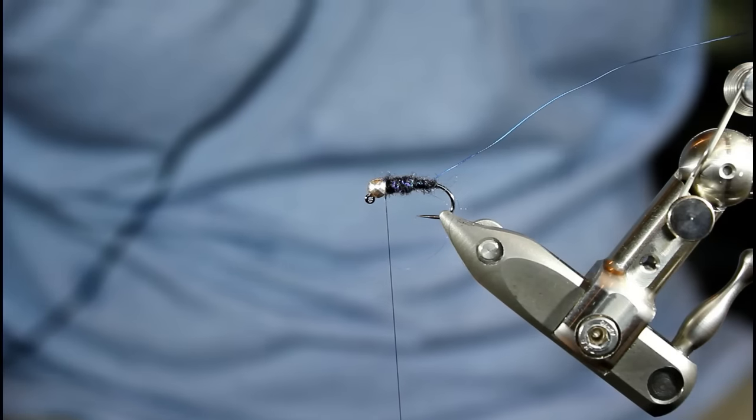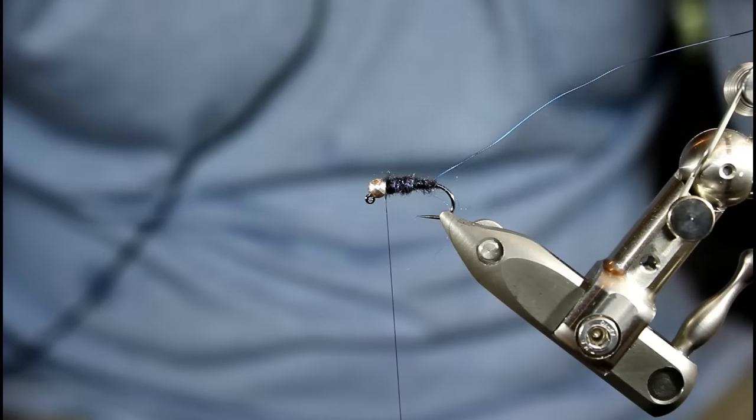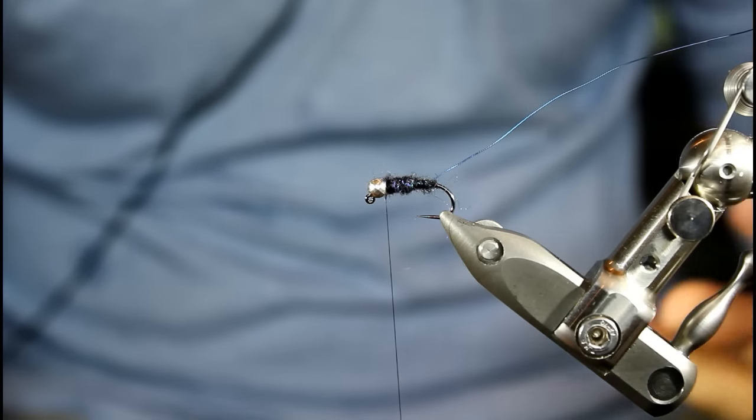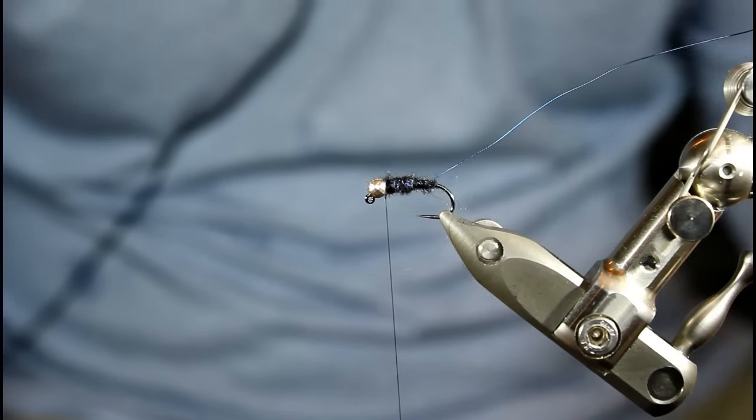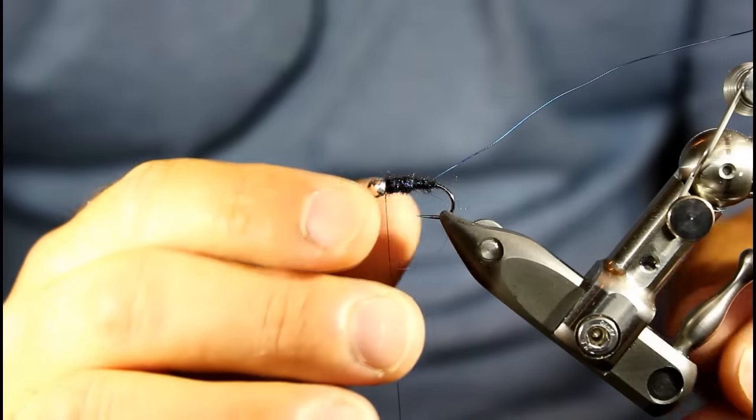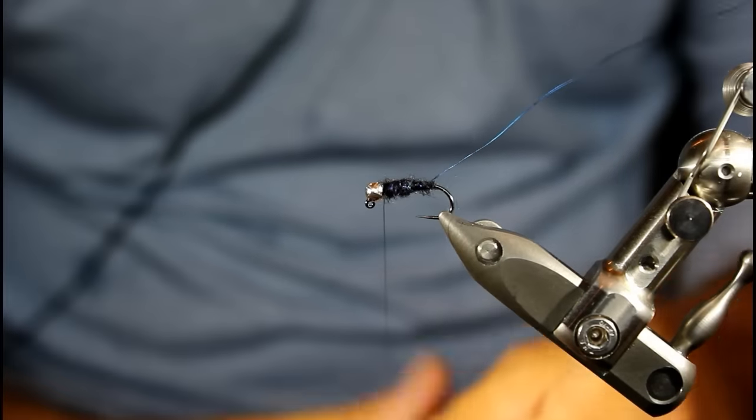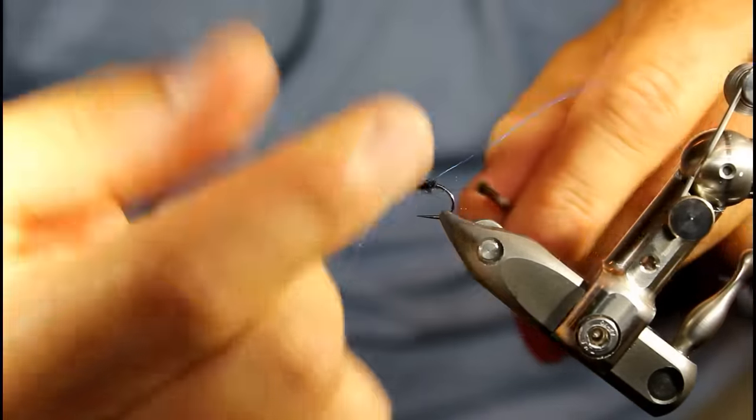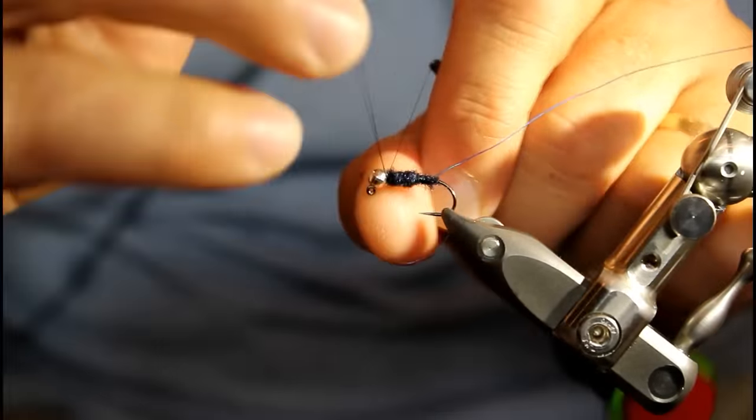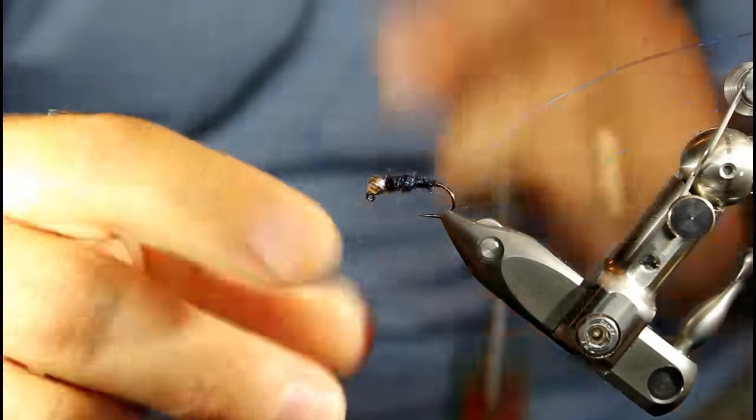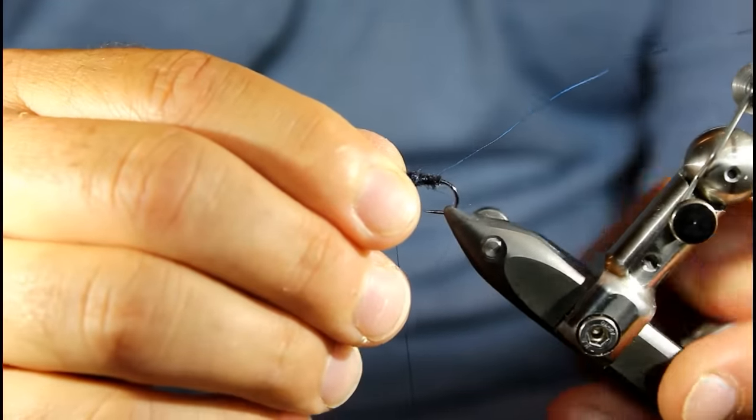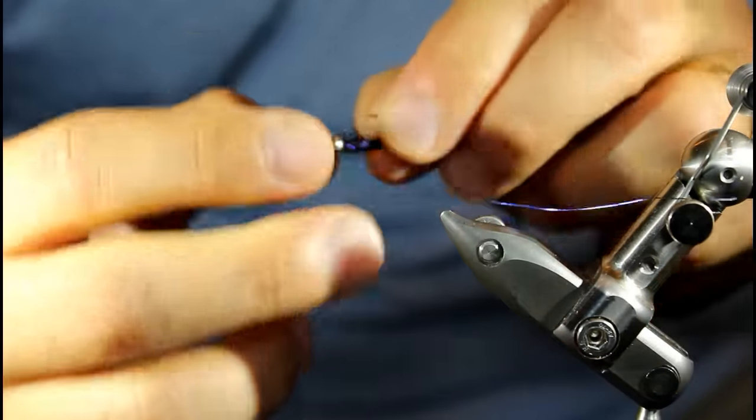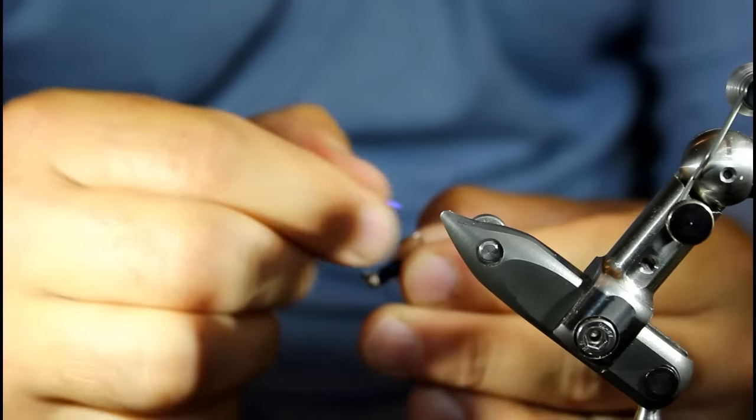Well next we have a couple different options. We can add our legs right now or we can wait until after we've added our tail and our bug skin. And I'm actually going to wait until afterwards. So what I'm going to do right now is just put a quick whip finish on here, just a couple just to kind of lock everything in place. And I'm going to remove the fly from the vise and turn it upside down.